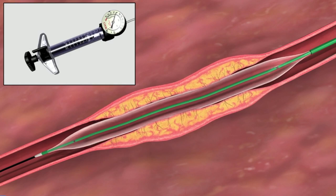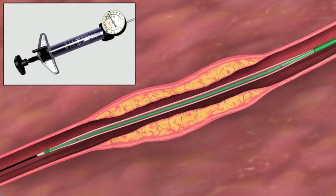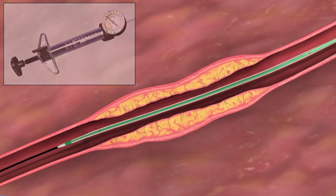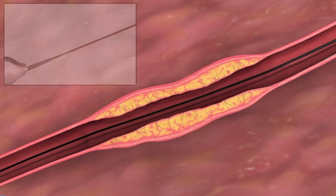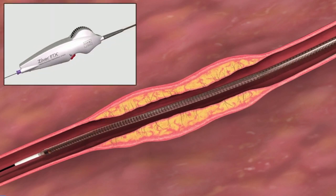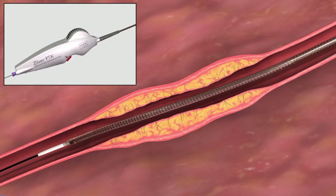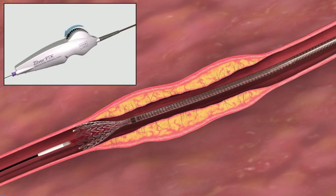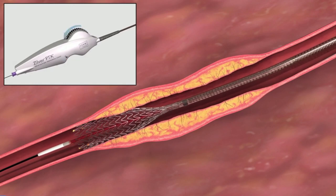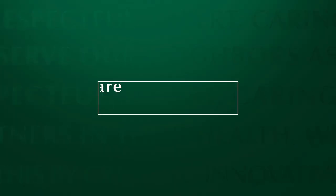And if we see that the stenosis or narrowing is really reluctant to be treated with a balloon, we can put a scaffolding inside — or a stent.